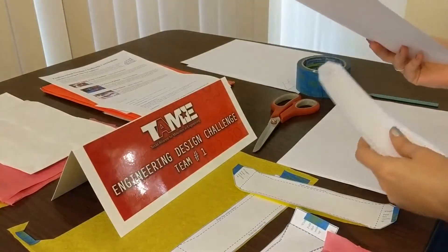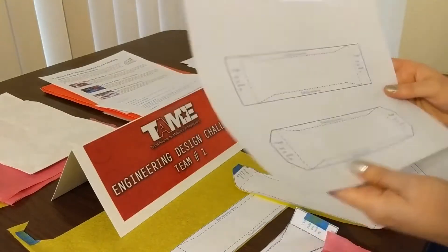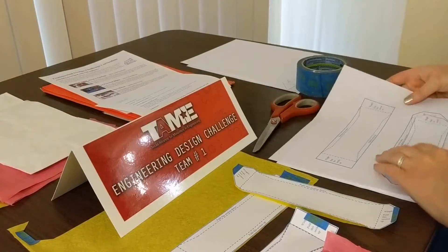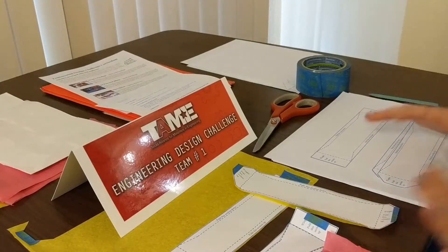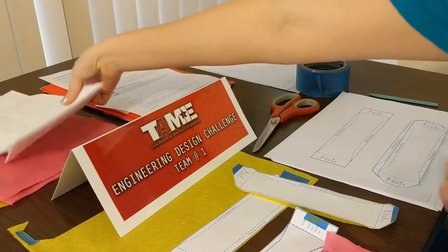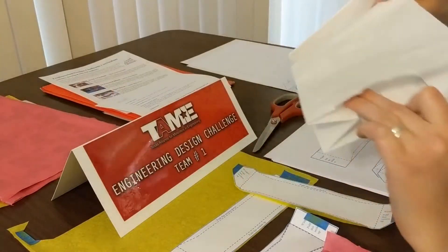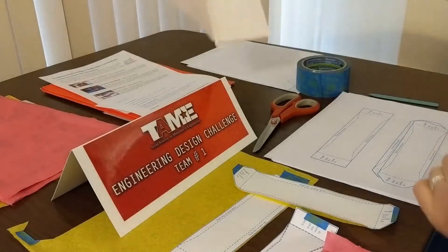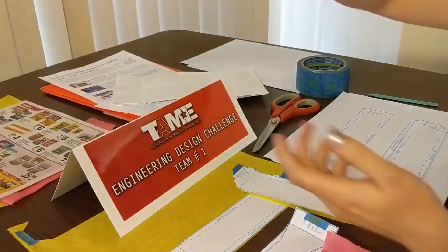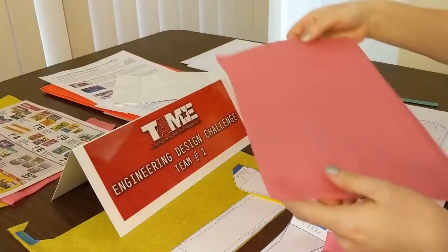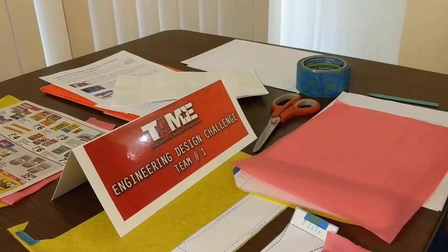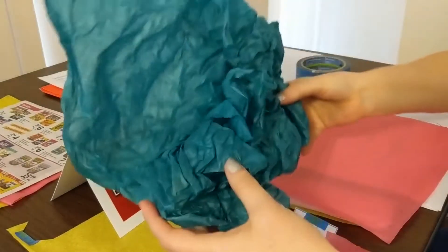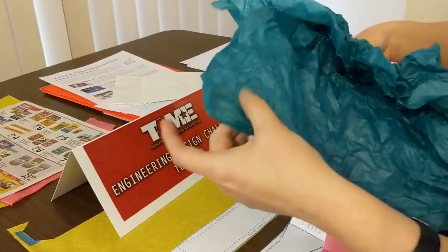You can also make your tumblewing out of regular printer paper, but it's a little heavier and we find that lightweight paper is usually better. So some other examples of paper that you could use, try a lightweight paper bag or try a piece of tissue paper. And tissue paper is fun, we want to make sure you're not using tissue paper that has been crumpled up because it's not going to hold the shape as well.